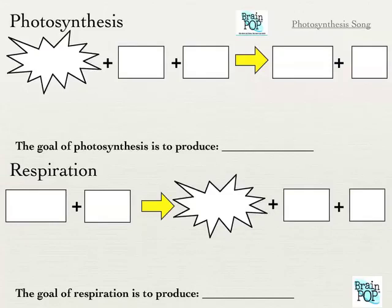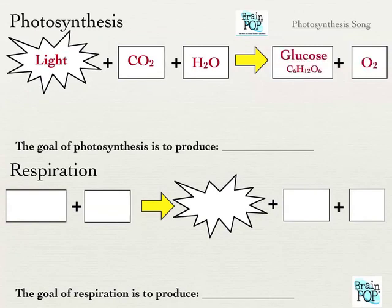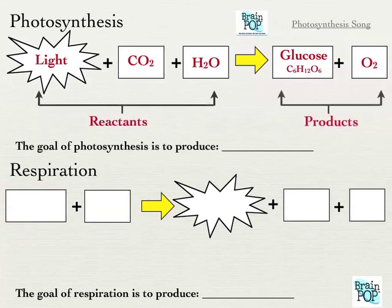Alright, so yesterday we talked, we did the top half of the slide. Photosynthesis is when plants take light, carbon dioxide and water, rearrange the atoms to produce glucose and oxygen. The goal is to produce glucose.